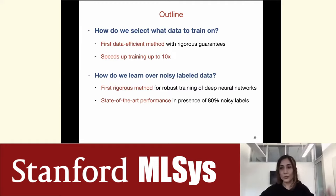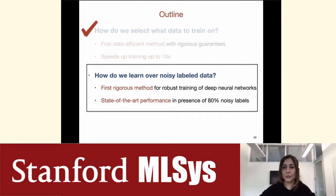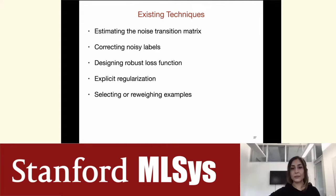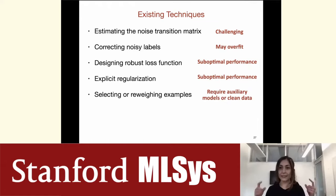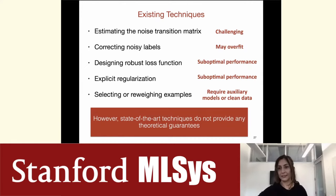Now let's switch gears to robustness — selecting examples for robust learning against noisy labels. Existing techniques include estimating the noise transition matrix, correcting noisy labels, designing robust loss functions, regularization, and relabeling examples. These methods are often either challenging, may overfit, sometimes do not give optimal performance, and some require auxiliary models or a clean set of data points. Most importantly, none of them provide any theoretical guarantee for the performance of the model trained on noisy data.